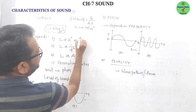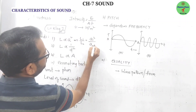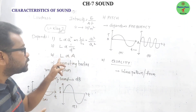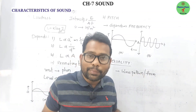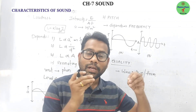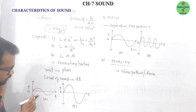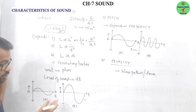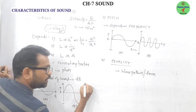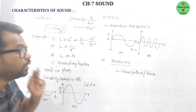Loudness depends on four factors: it is proportional to the square of amplitude (L₁/L₂ = A₁²/A₂²); it is inversely proportional to distance between source and listener; it is proportional to the surface area of the vibrating body; and it depends on the presence of resonating bodies. In exam questions, the wave with greater amplitude will have greater loudness.